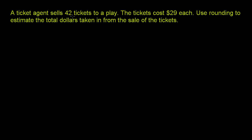A ticket agent sells 42 tickets to a play. The tickets cost $29 each. Use rounding to estimate the total dollars taken in from the sale of the tickets. If we wanted the exact number, we could say 42 times 29 and work out the multiplication. But they essentially want us to be able to do it in our head — we want to round the numbers first and then multiply.